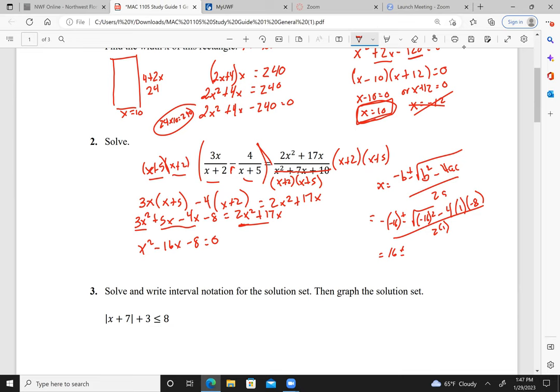So here I have 6 plus or minus the square root of 36 plus 32 over 2. I have 36 plus 32 gives me 68, which is not a perfect square. Here I can factor out. I have equals 6 plus or minus 2 times the square root of 17.